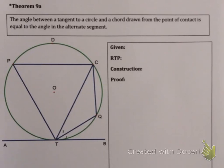Okay guys, time for our last circle geometry theorem. That's theorem 9a and its converse 9b.